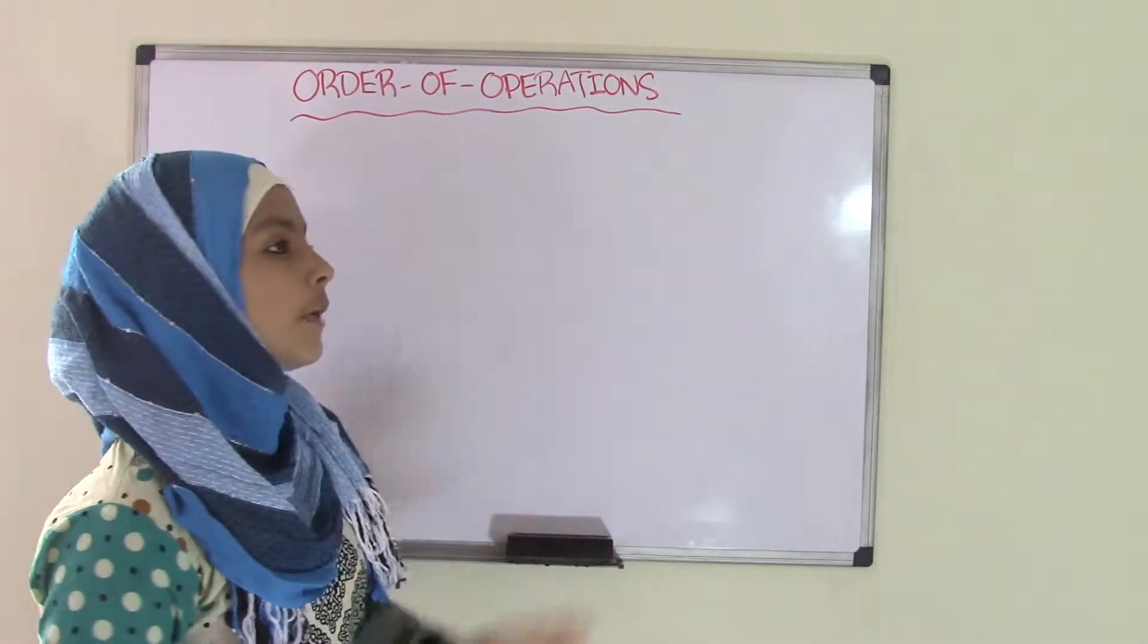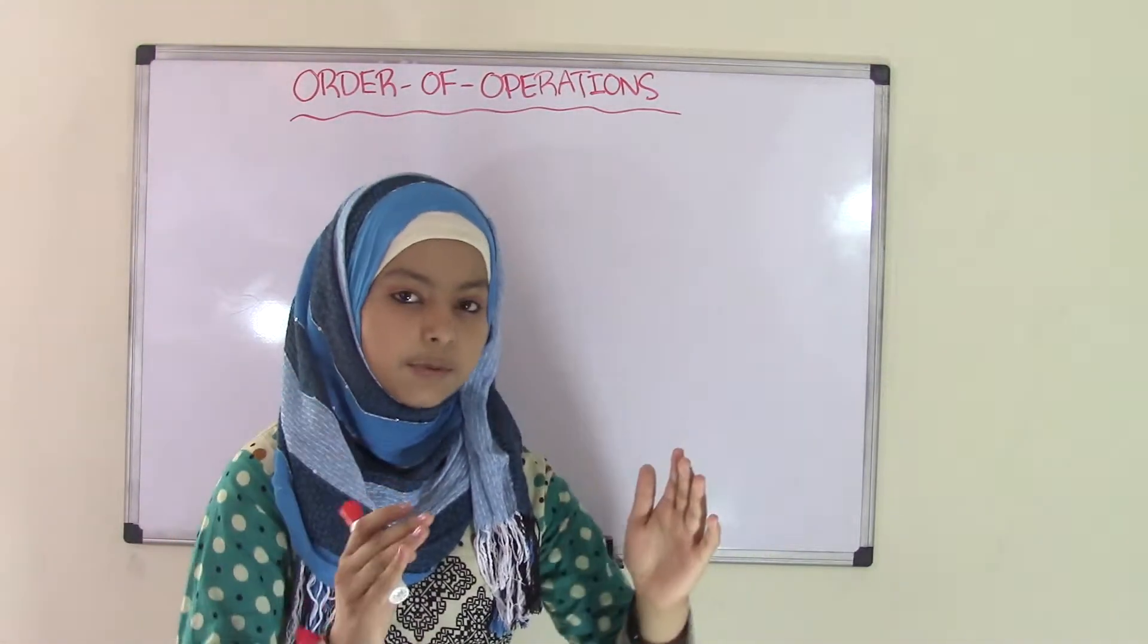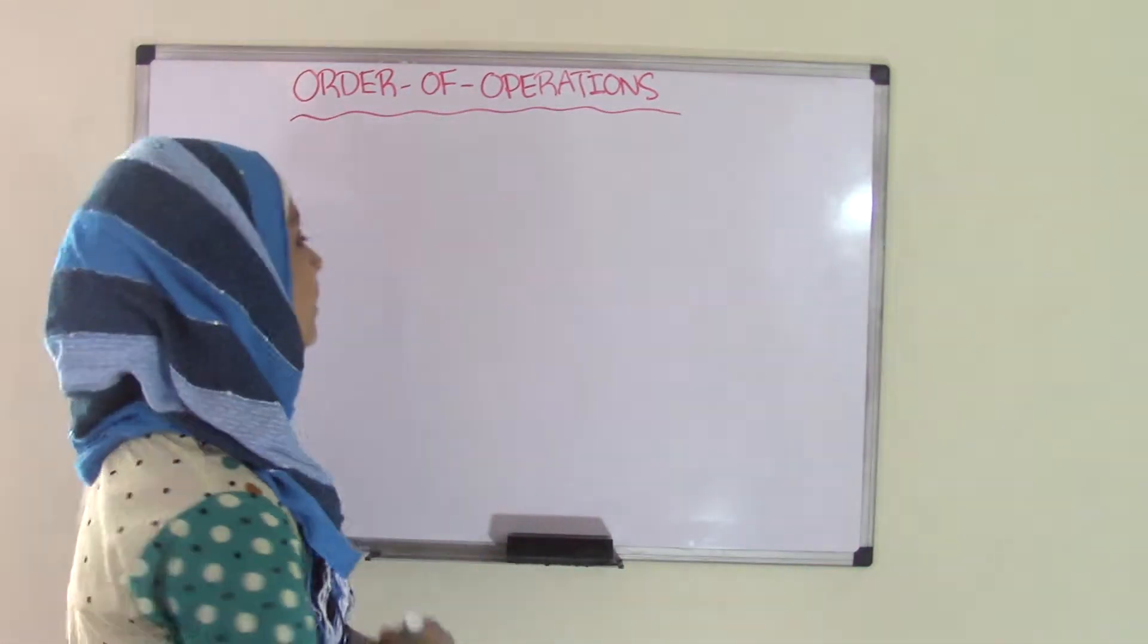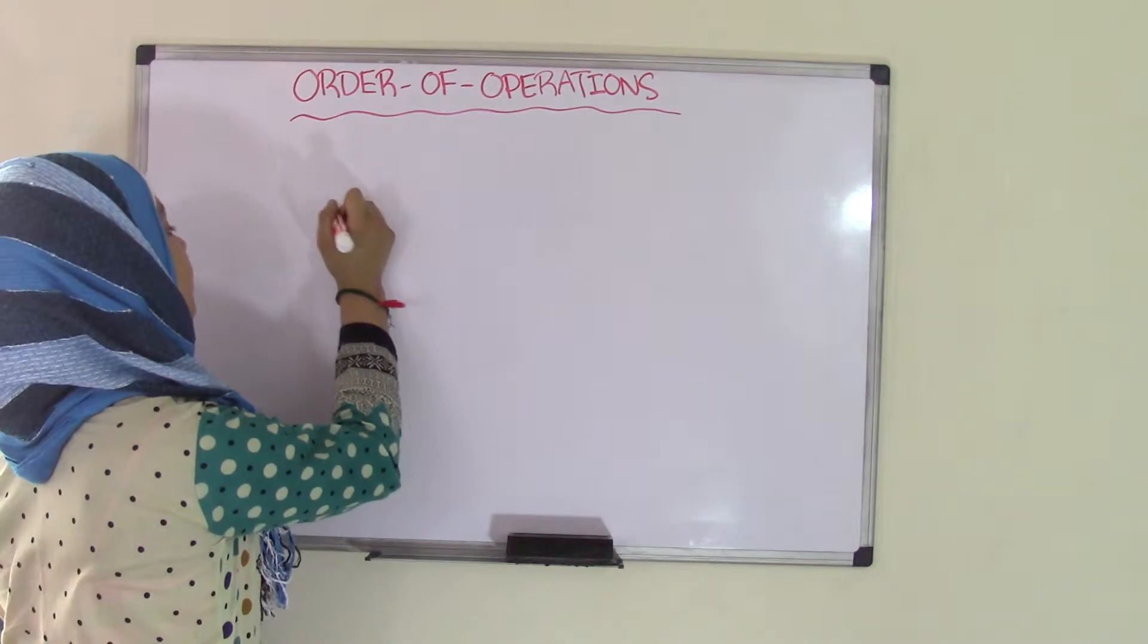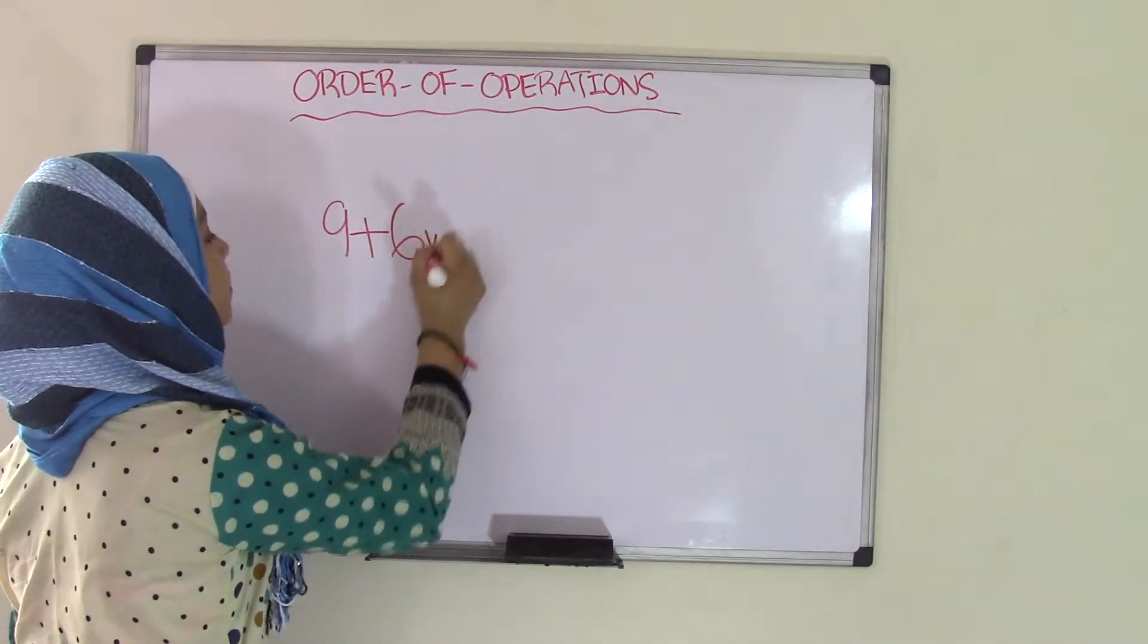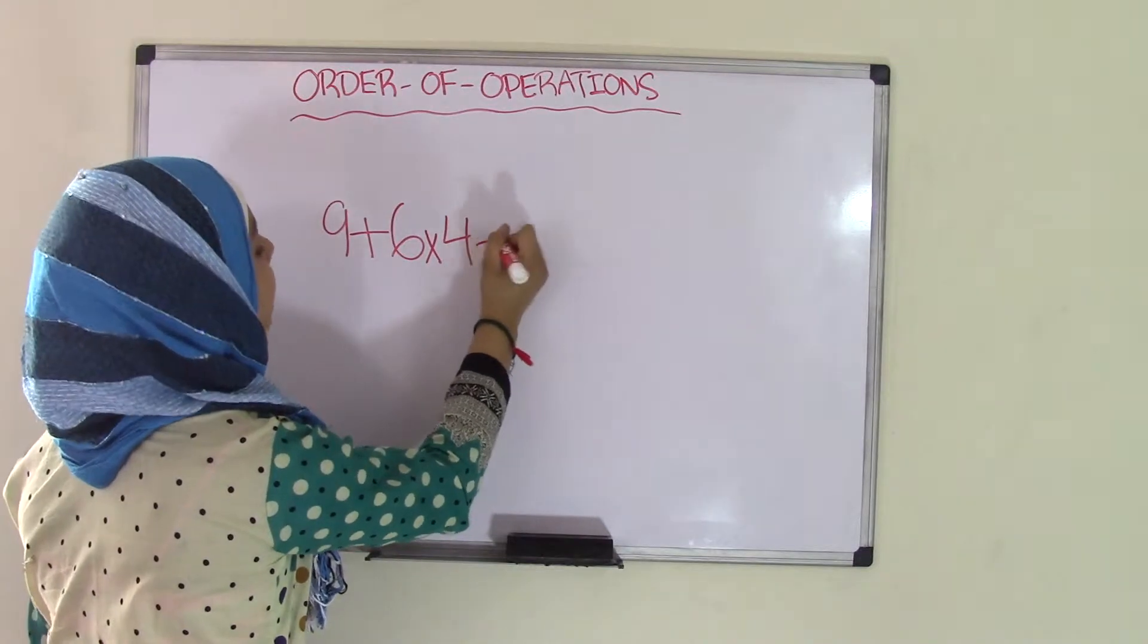These four operations, we use them in any sort of math problem that we want to do. So the order of operations is you have expressions and you're going to use all these four operations to solve them. So let's say we have a problem such as 9 plus 6 times 4 minus 2.